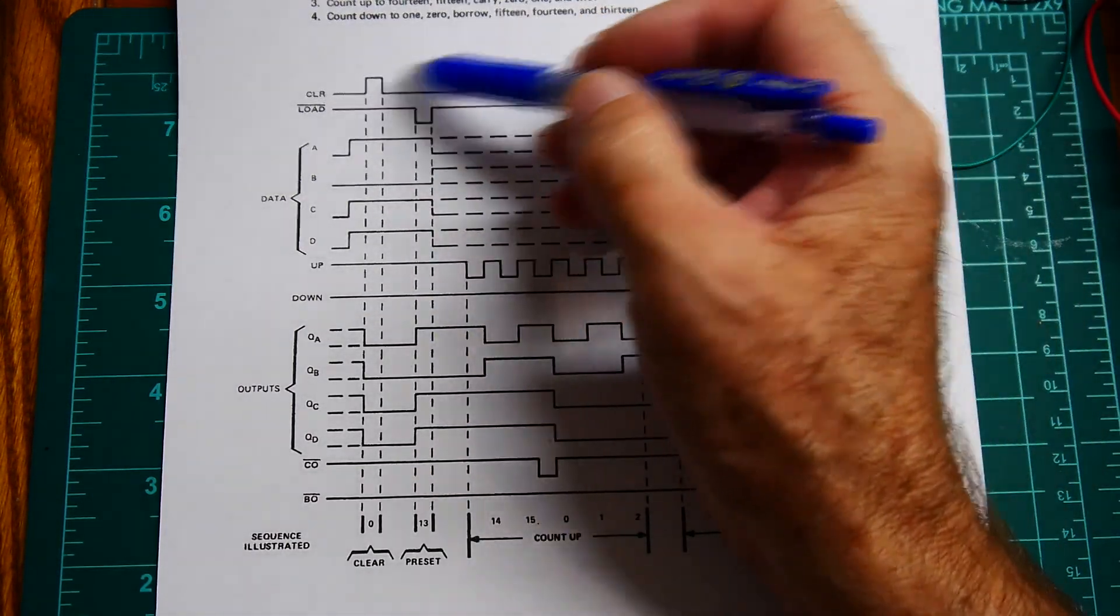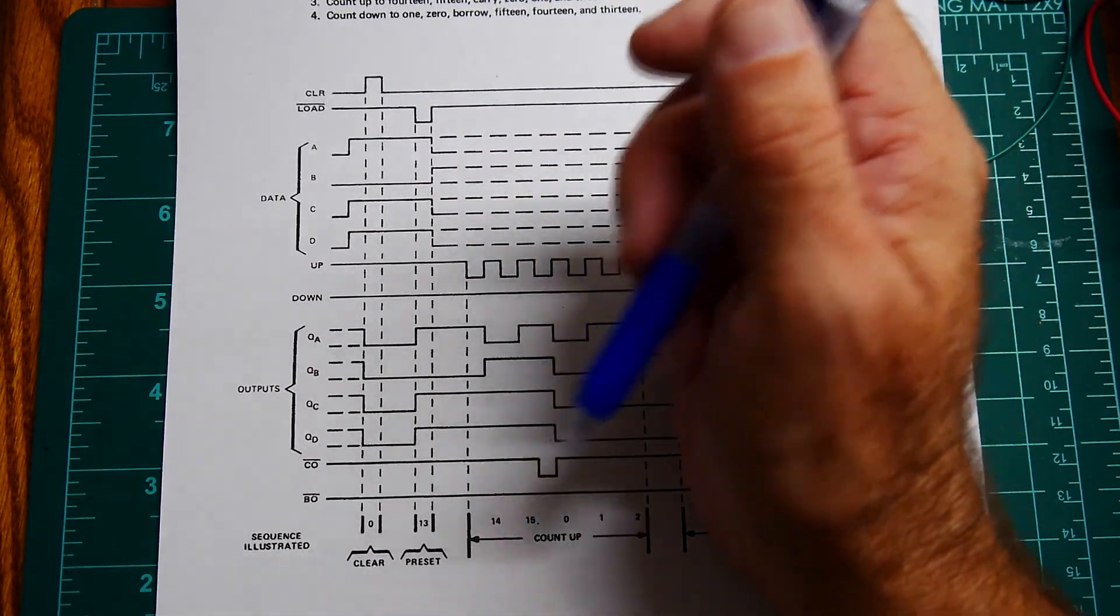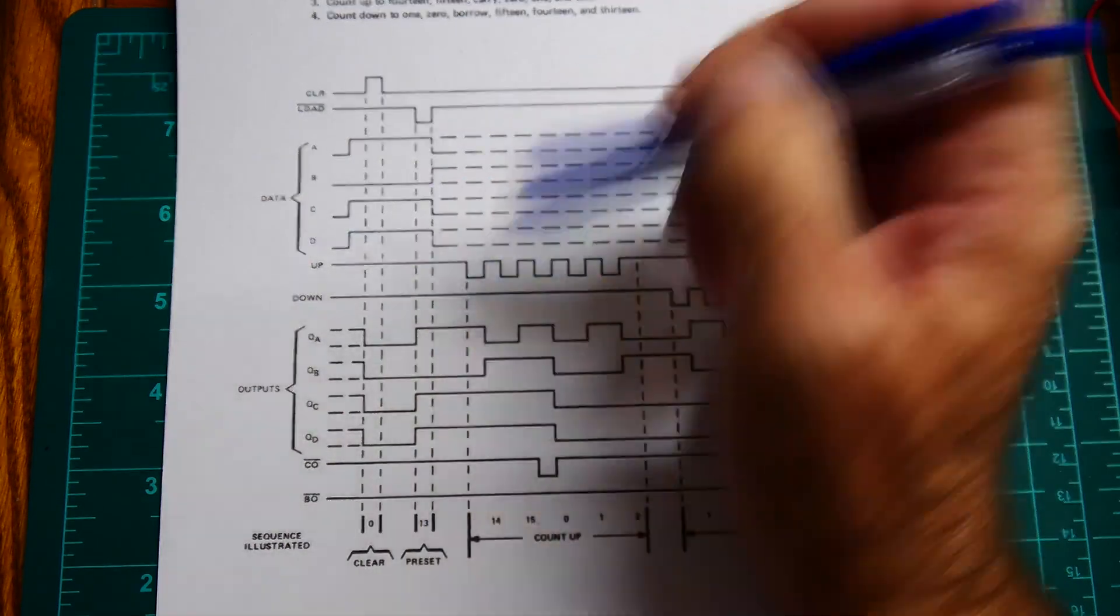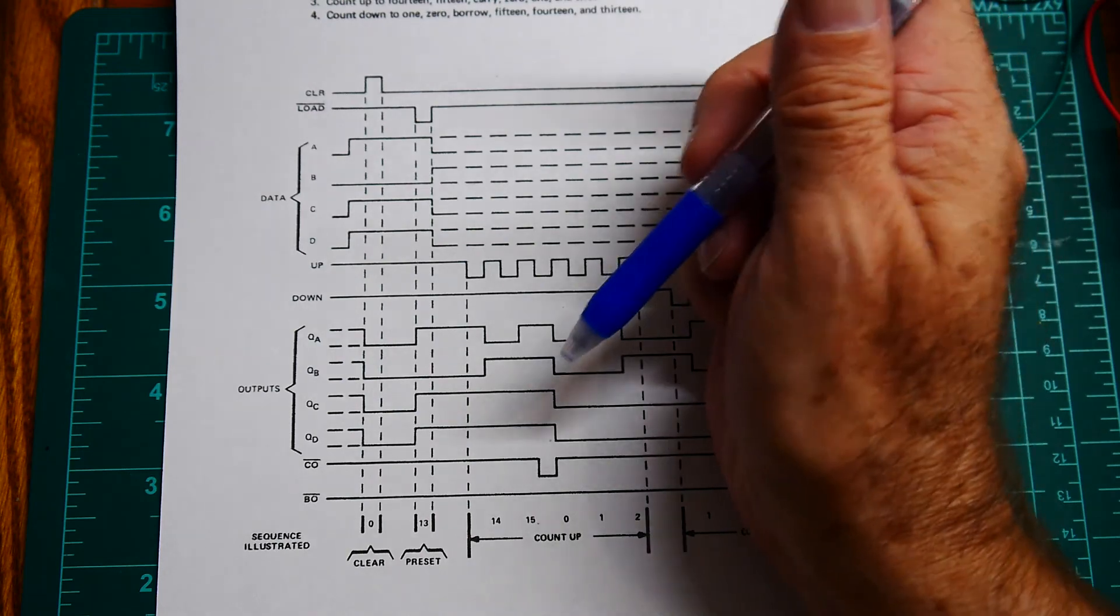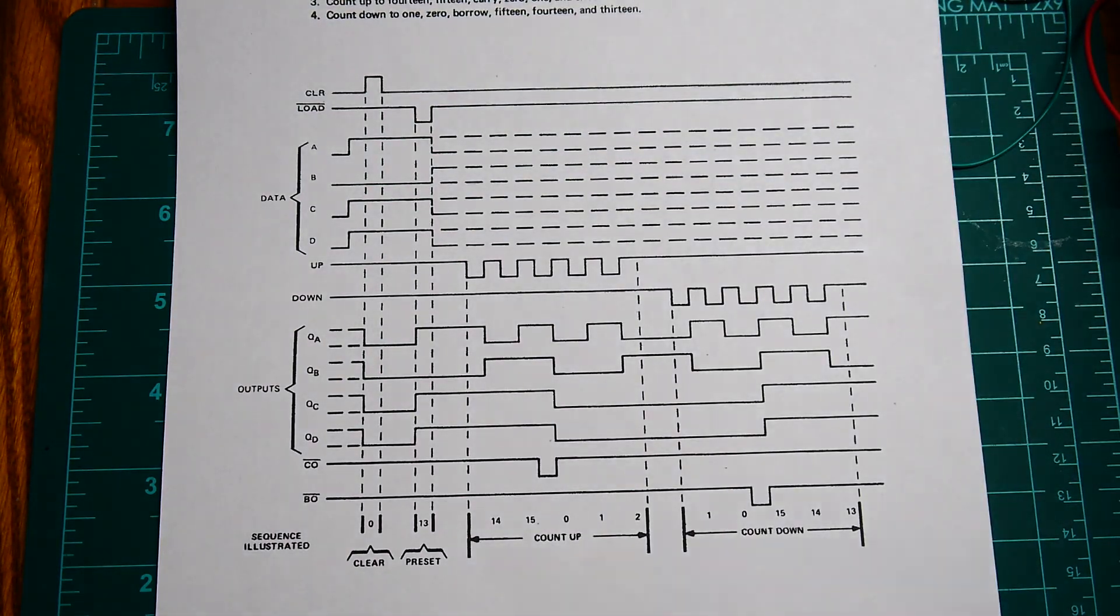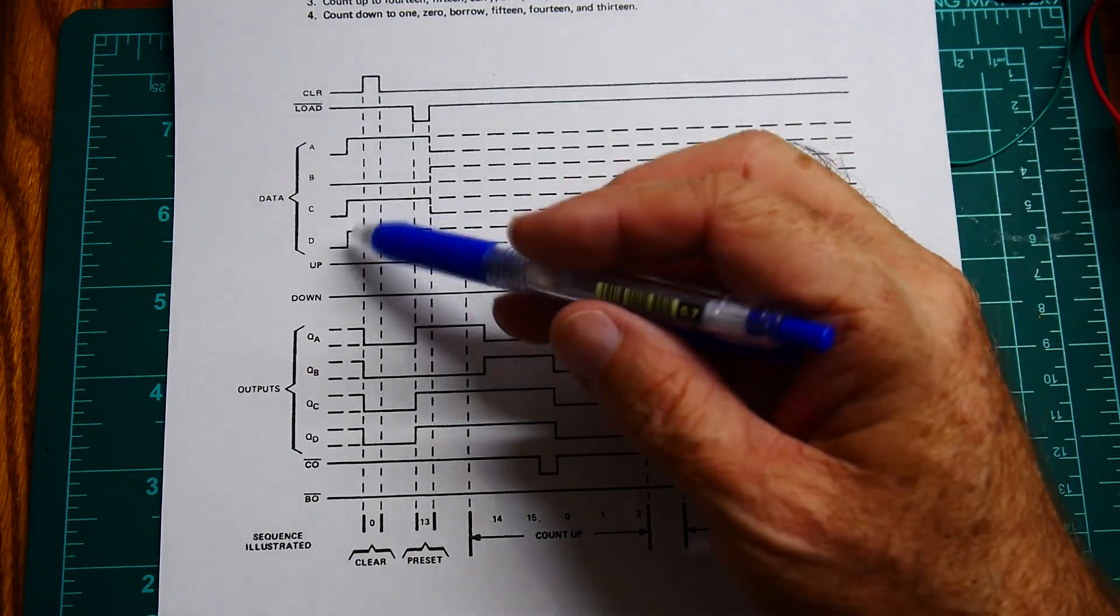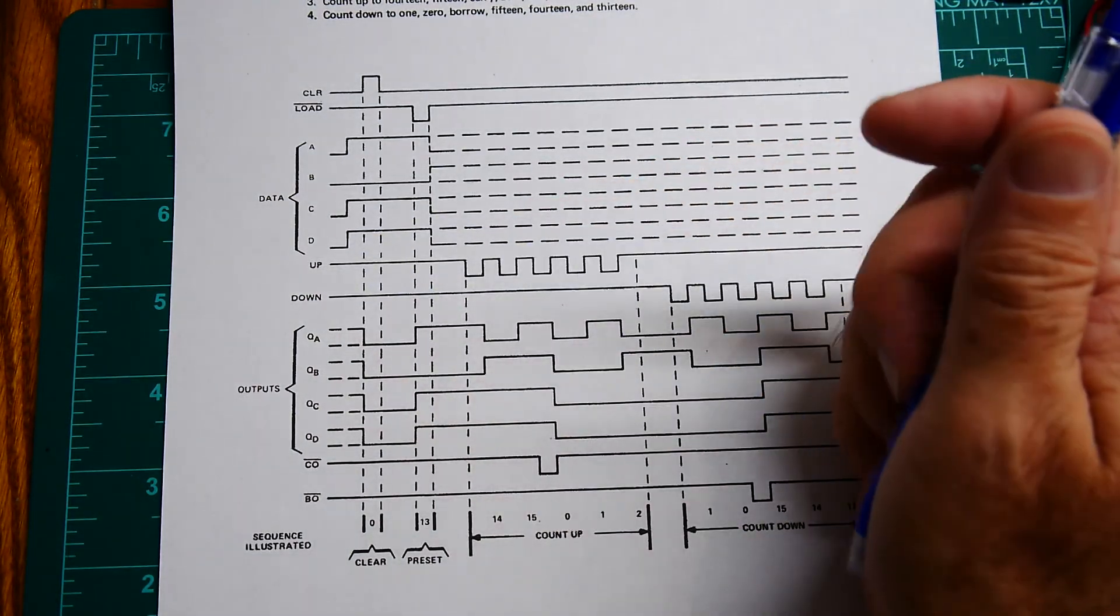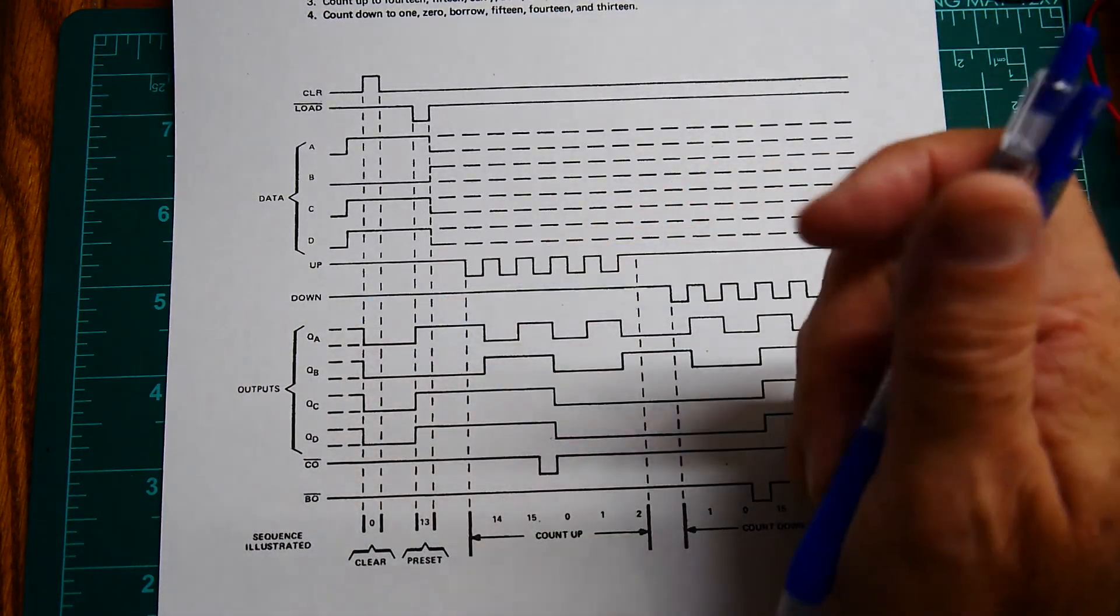So the clear is positive going so we'll have to take care of that and the load is negative going so that's great, I think that's what we have now. And then all we have to do is run PC increment into the up and I don't think we'll be using the down so we'll just tie that high.